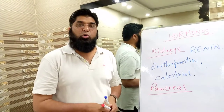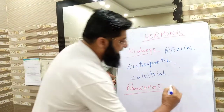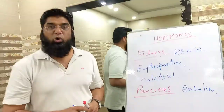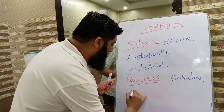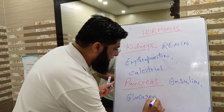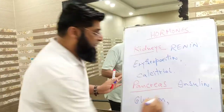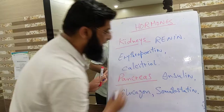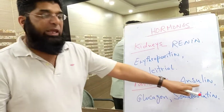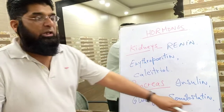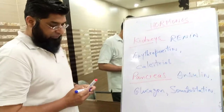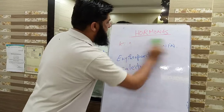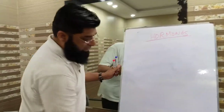Our next target organ is the Pancreas. The pancreas produces Insulin, Glucagon, and Somatostatin — all very important hormones.